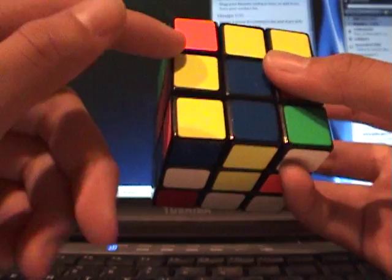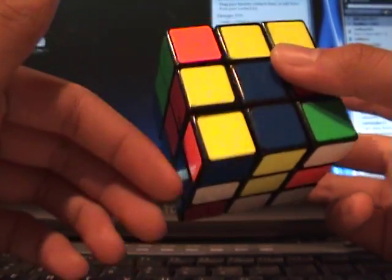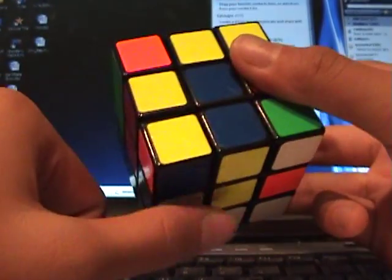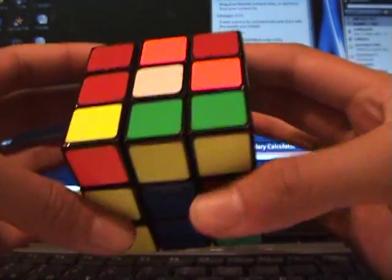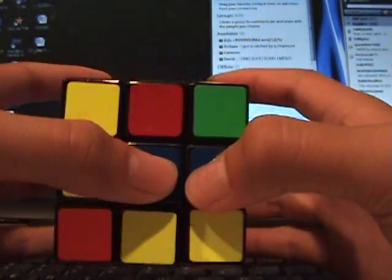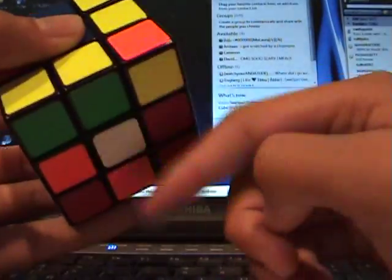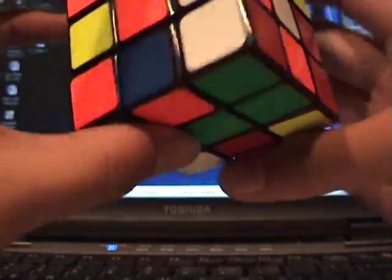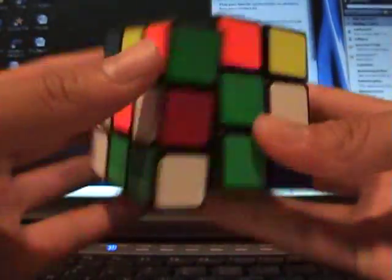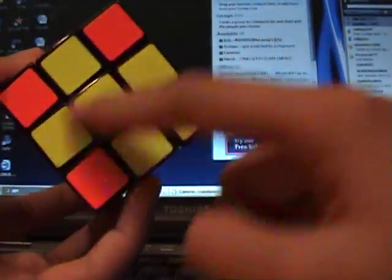I'll just do an example. Usually people solve the cross on the bottom or the left, but for beginners, I recommend the bottom. Don't do the top yet. If you do do the top, make sure when you're ending your cross, you have it at the bottom. I'm going to do yellow. I'm not going to teach this because you already should know it. There's a cross.